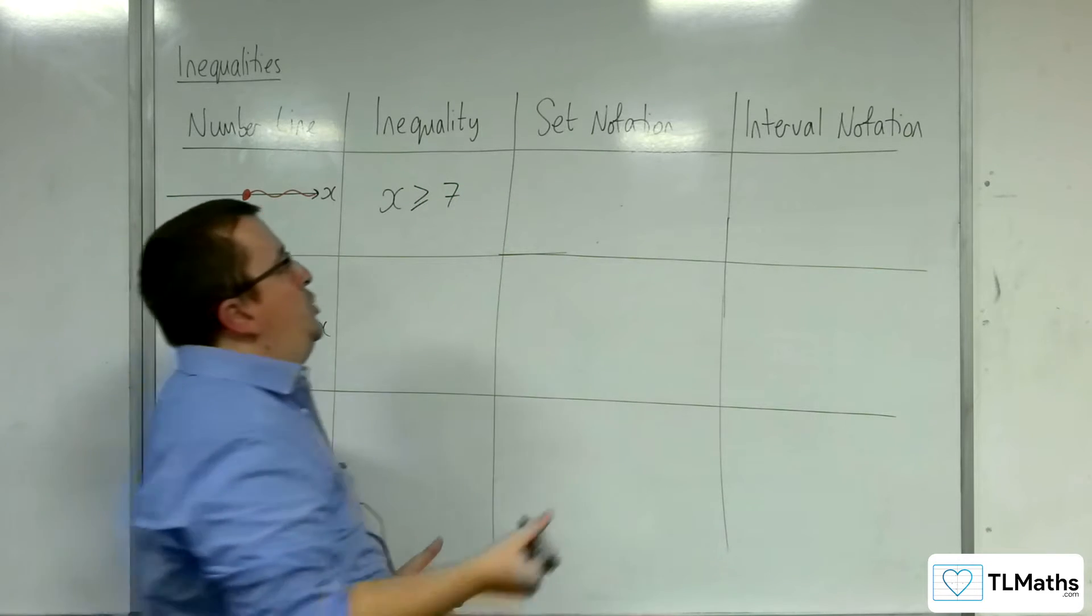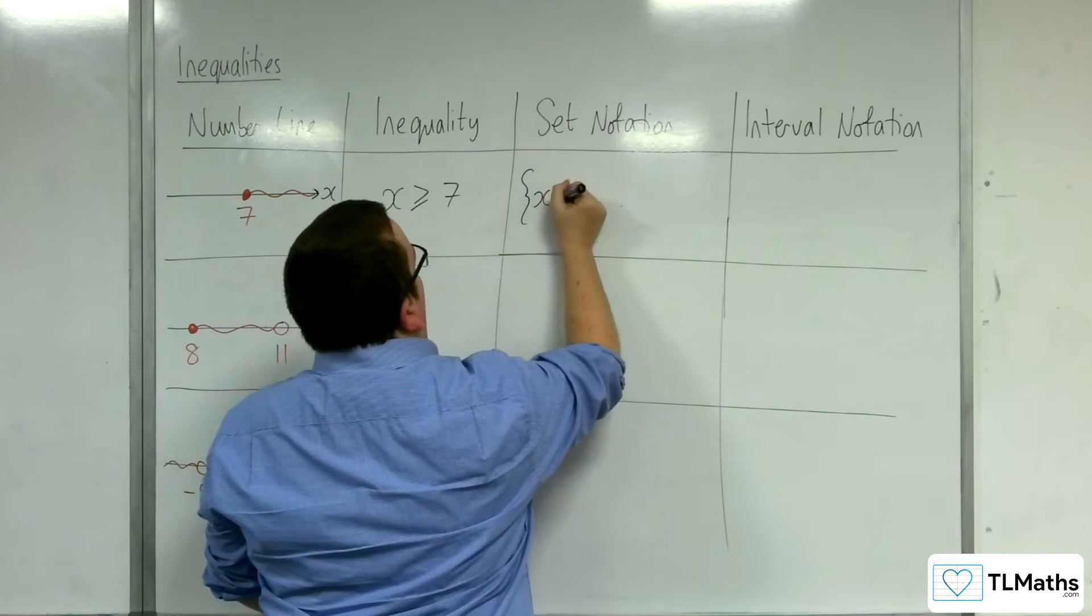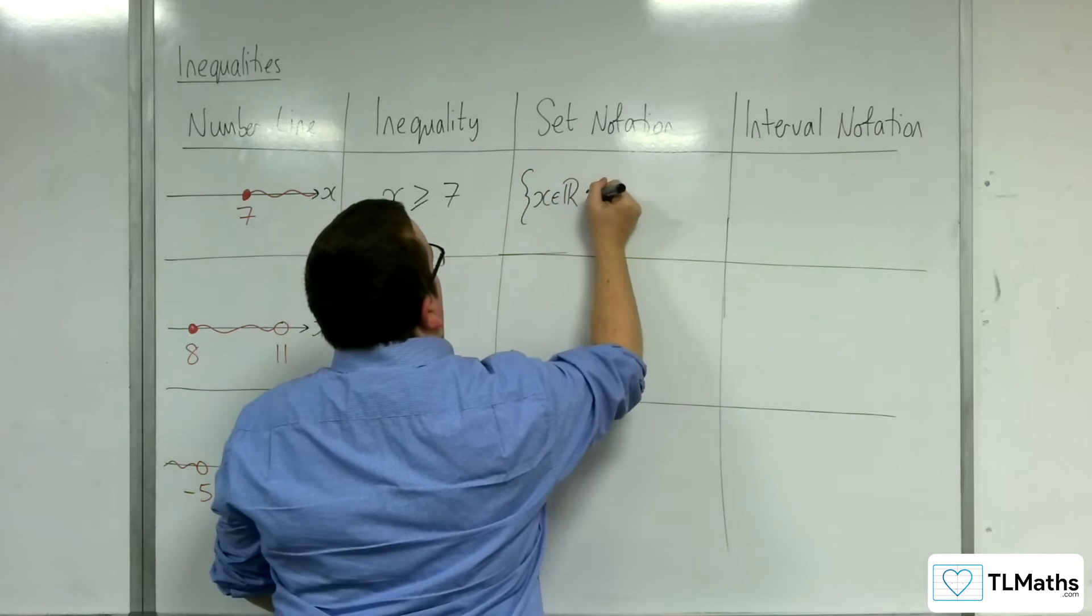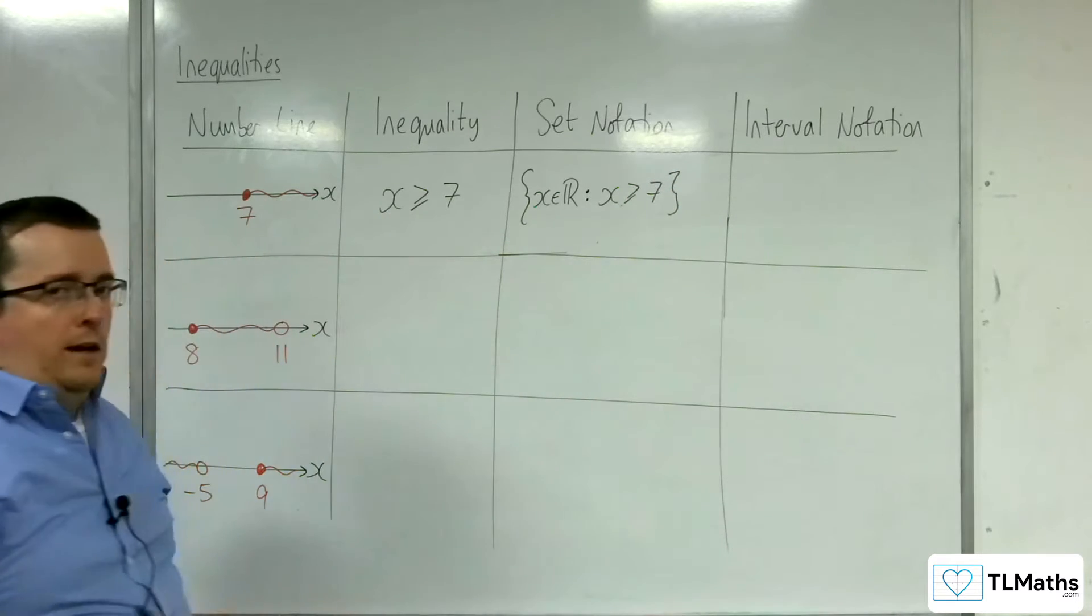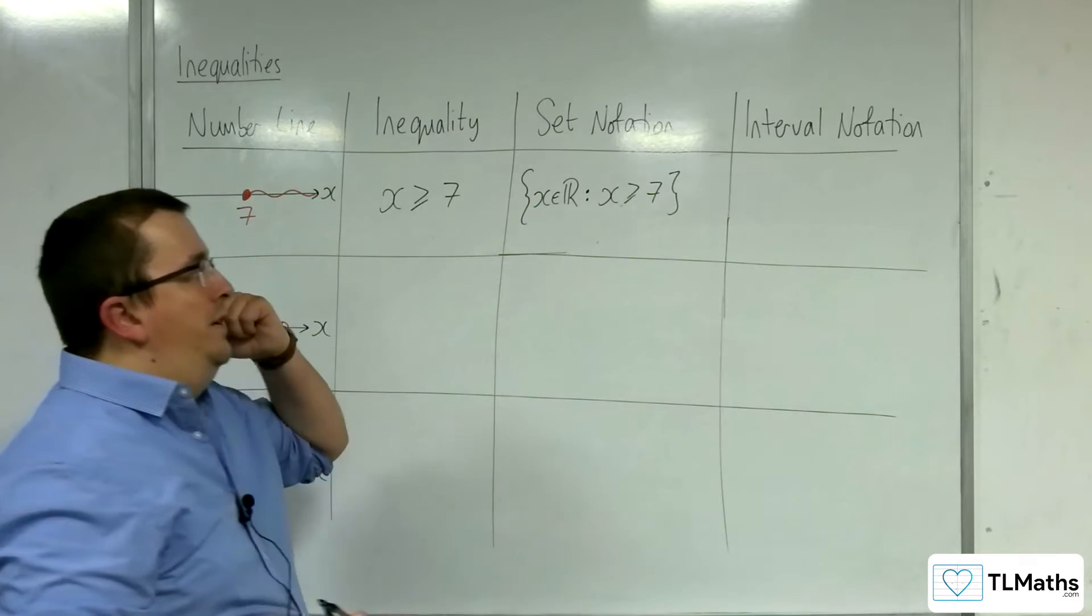Now in set notation, we would say that x belongs to the real numbers, such that x is greater than or equal to 7. Remember, it's got to be in curly brackets for set notation.